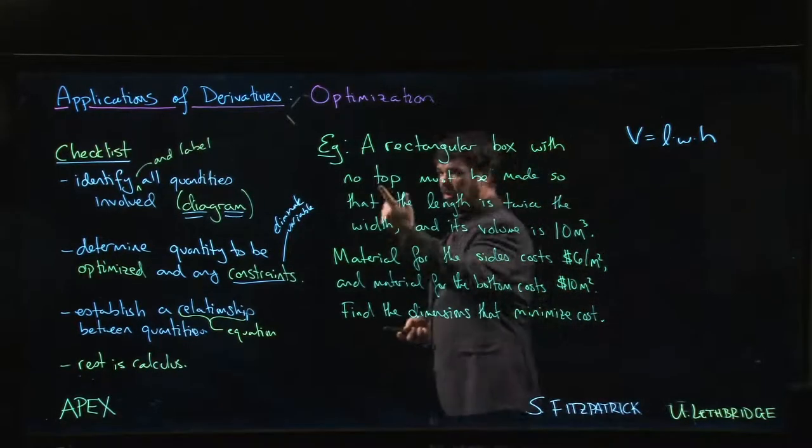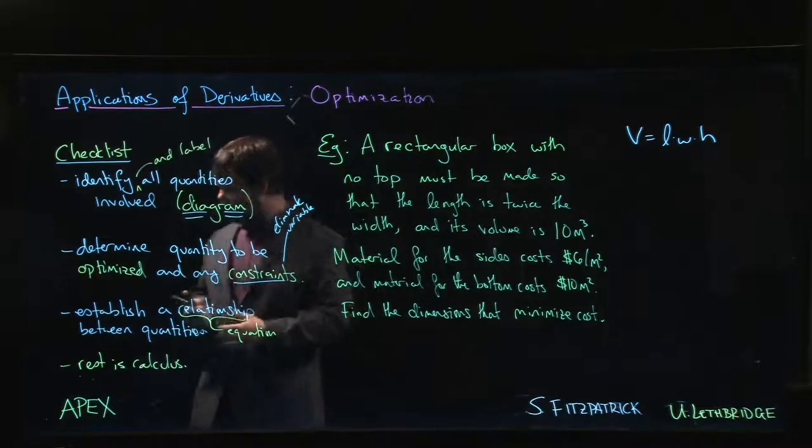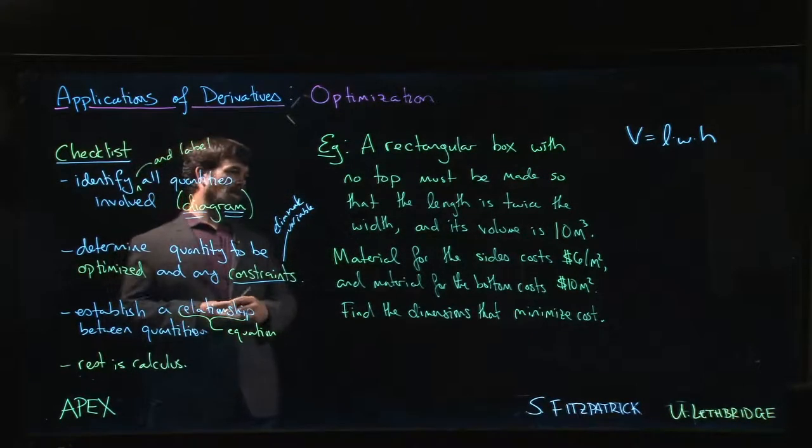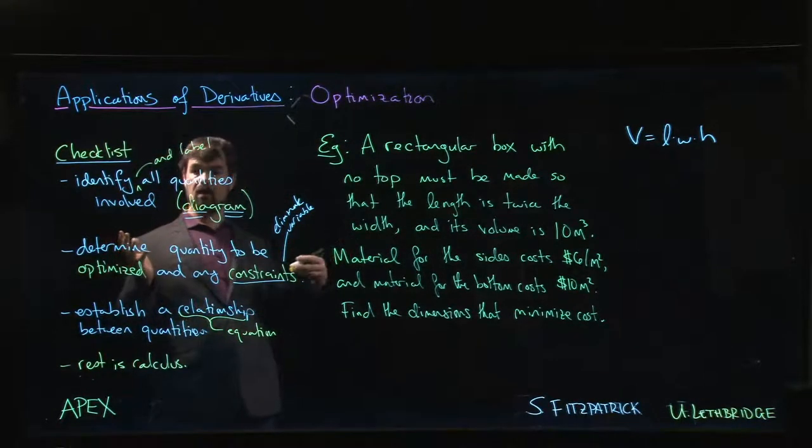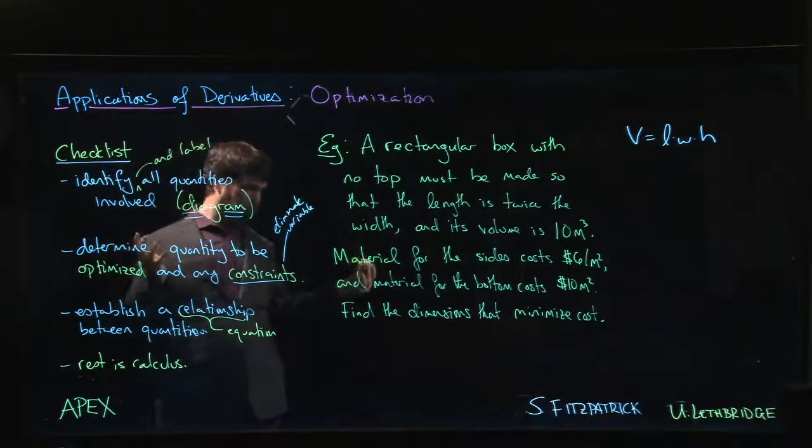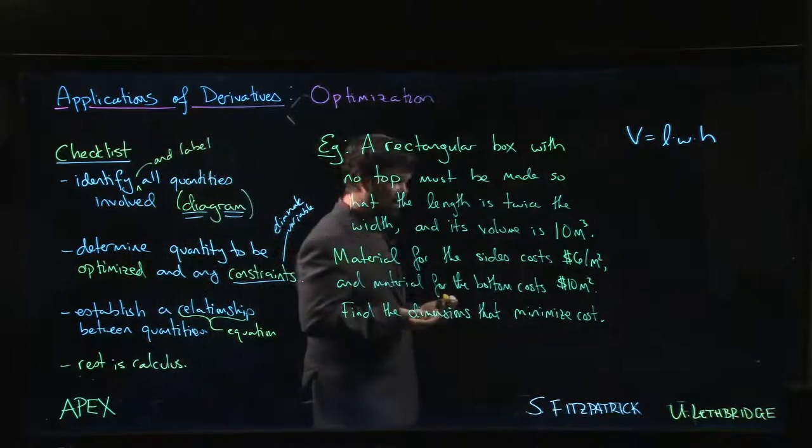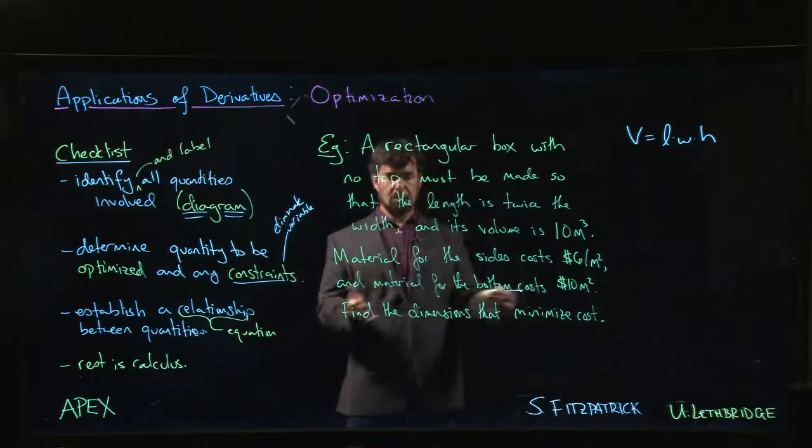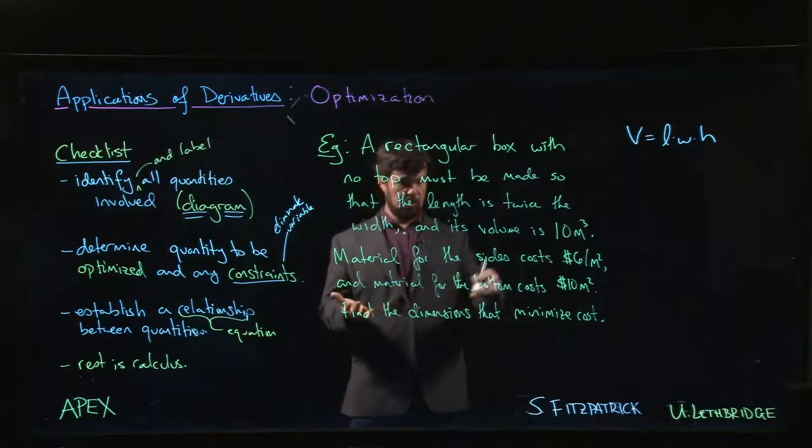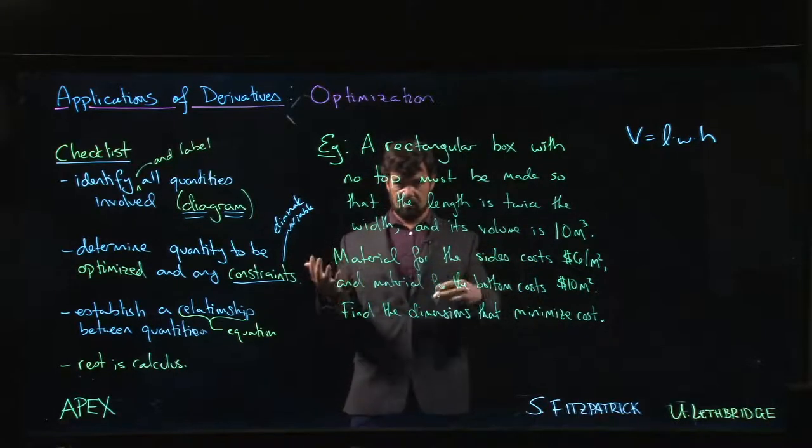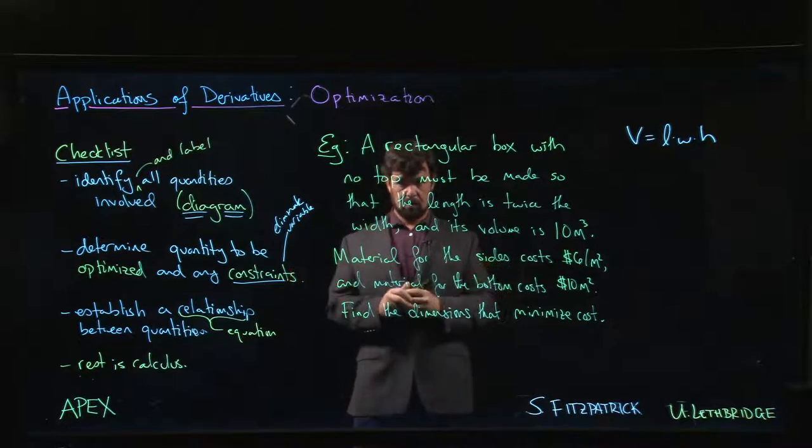And we don't put a lid. If all I gave you was I said build a box with a given volume that has the minimum area, well, you'd make a cube. So we want to come up with problems where the answer is not going to be a cube. So we throw in these things to kind of break the symmetry, make the problem a little bit more interesting. Alright, so minimize the cost.